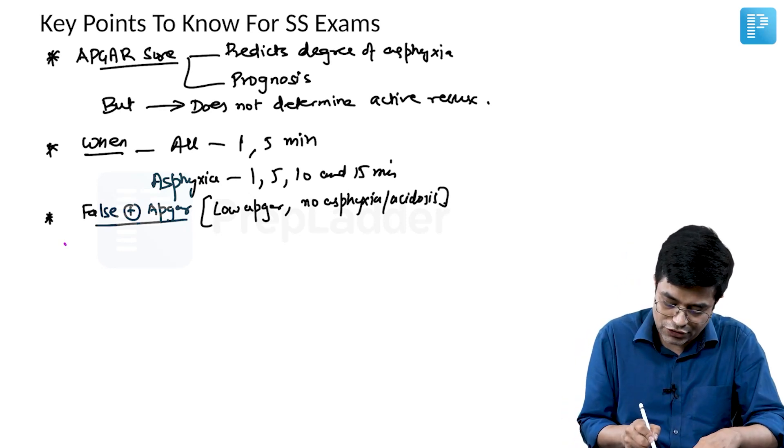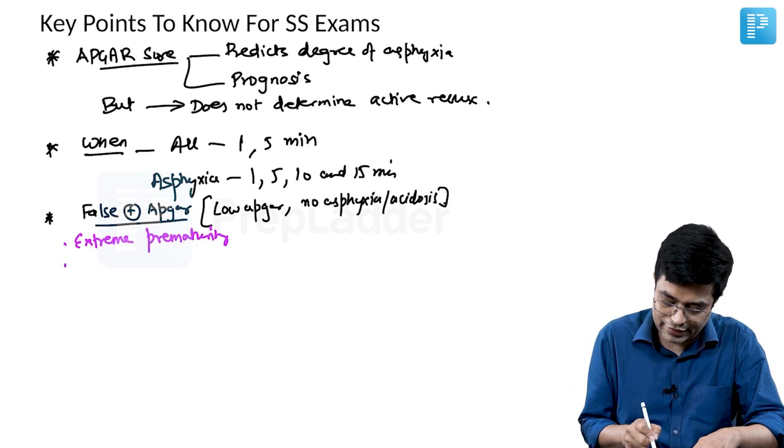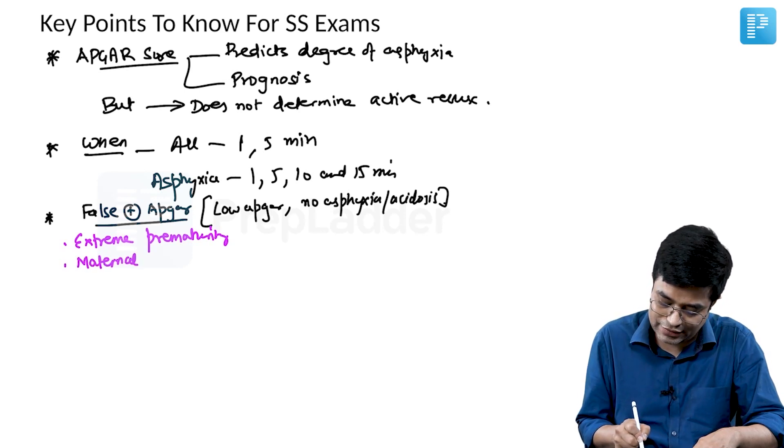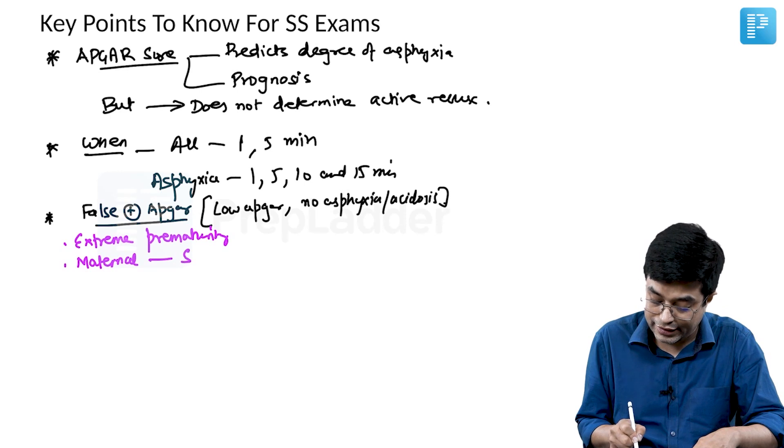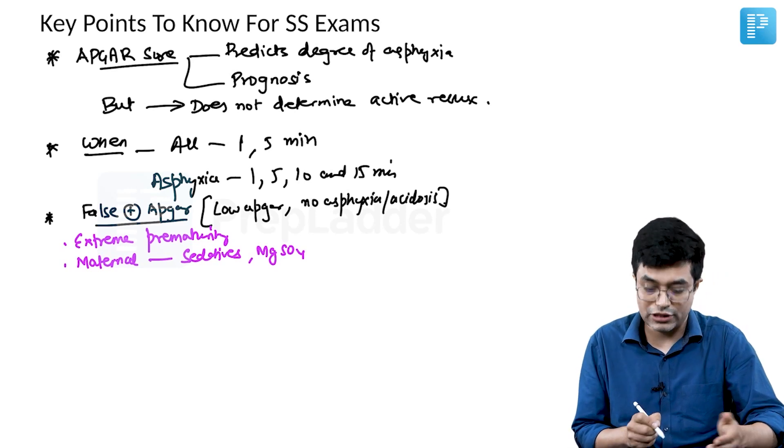What are the causes that you should remember? First of all, extreme prematurity can sometimes cause a false positive APGAR score. Secondly, if the mother is having intoxication, so maternal drugs like sedatives, maternal magnesium sulphate can sometimes cause false positive APGAR score.